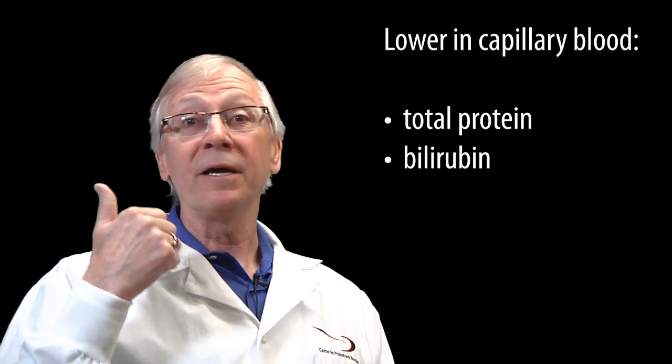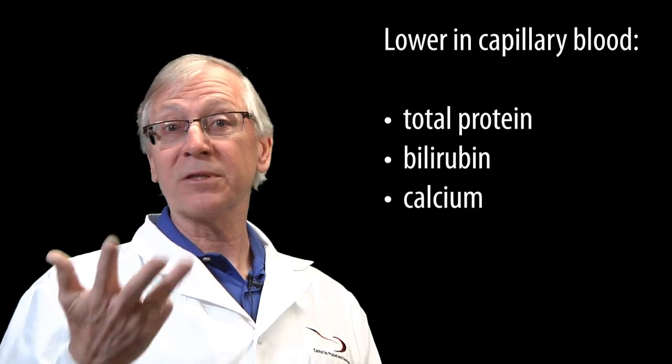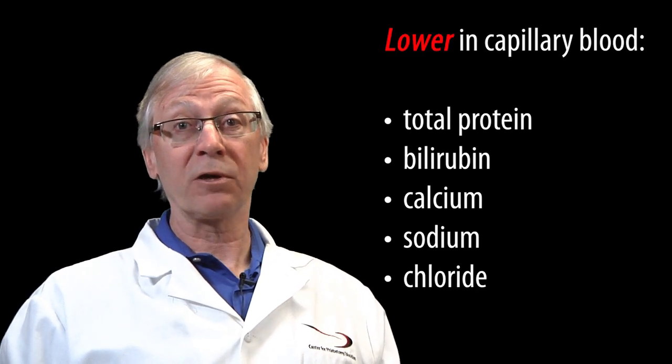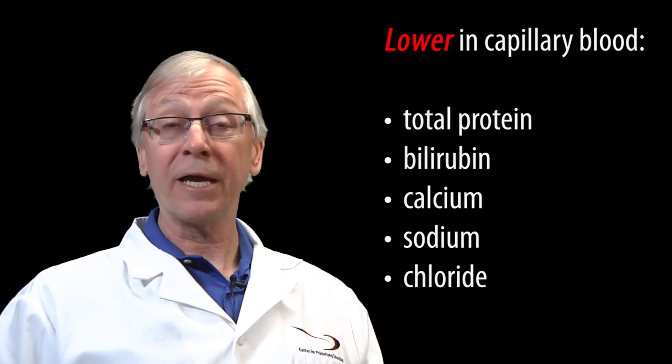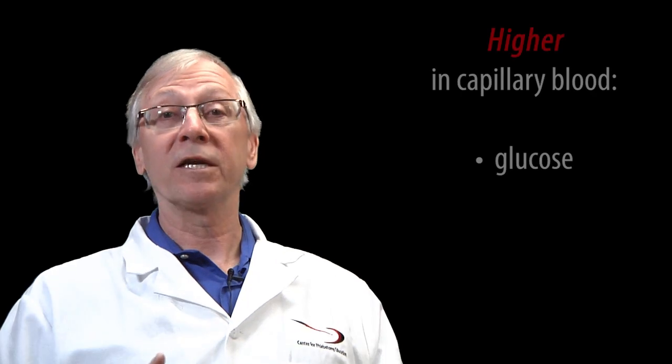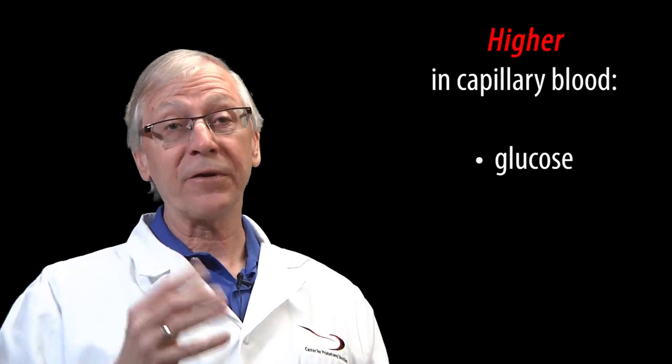Physicians who use venous blood normals for interpreting capillary blood are likely to misinterpret total protein, bilirubin, calcium, sodium, and chloride results, which are all significantly lower in capillary blood. Likewise, for glucose results, which are significantly higher.